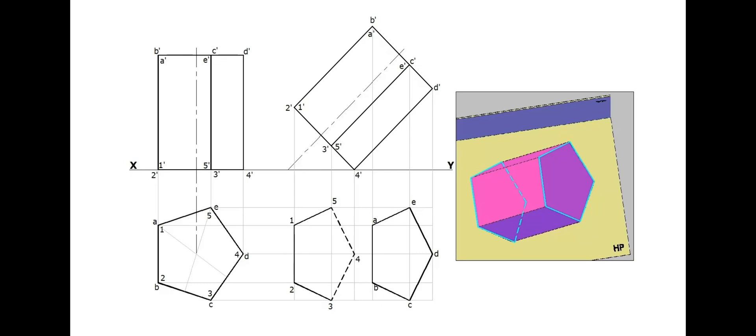Long edges 5-E, 1-A, 2-B and 3-C are visible. Long edge 4-D is invisible. By this, we have completed the second stage of projections also.